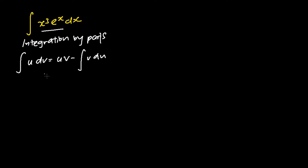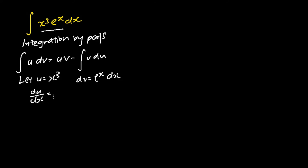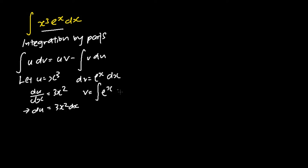In this particular case, I will let u be equals to x cubed, and then my dv be equals to e to the power of x dx. To find what is my du, I differentiate u with respect to x. This gives me 3x squared, in which multiplying both sides by dx, I will get du is equals to 3x squared dx. To find my v, I integrate dv, which is the integral of e to the power of x dx. I will get e to the power of x.